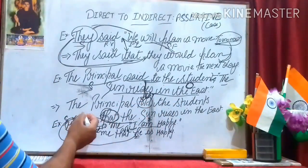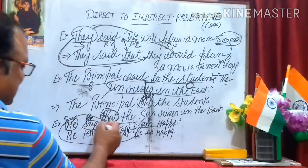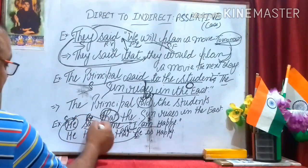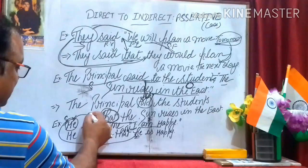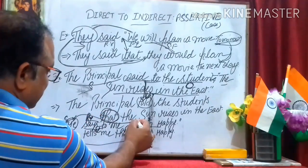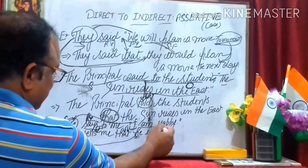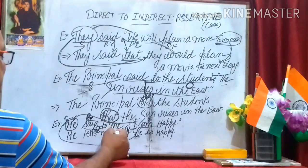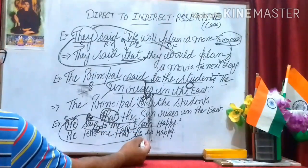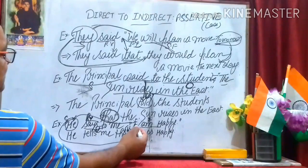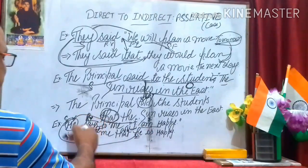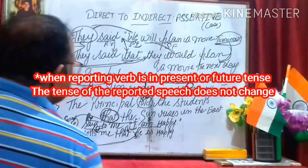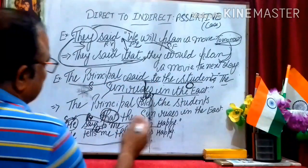Let's see one more example: 'He says to me, I am happy.' Here 'he' is the subject, 'says to' is the reporting verb. 'Says to' changes into 'tells', so it becomes 'he tells me'. In place of inverted commas, we use 'that'. 'I' is first person and changes according to the subject, so 'I' becomes 'he'. The final answer is: 'He tells me that he is happy.'